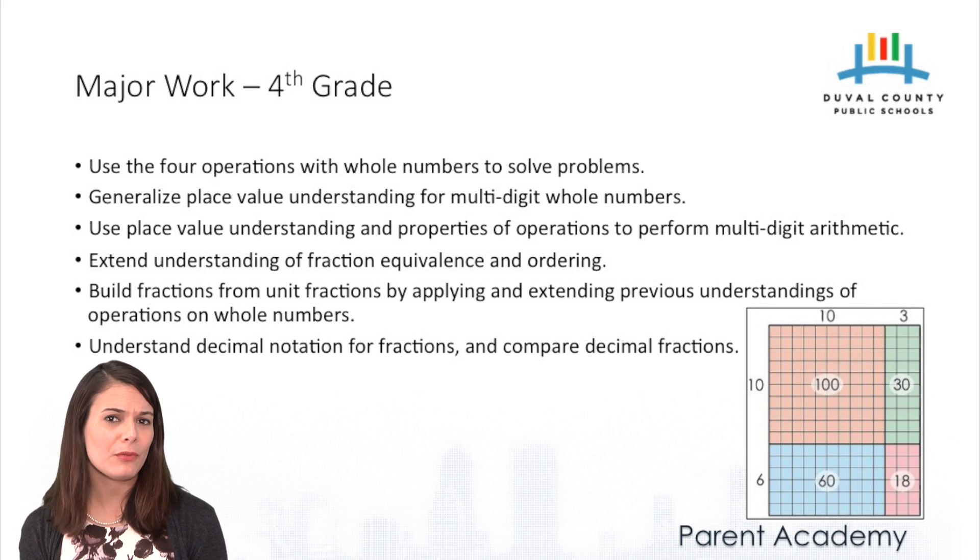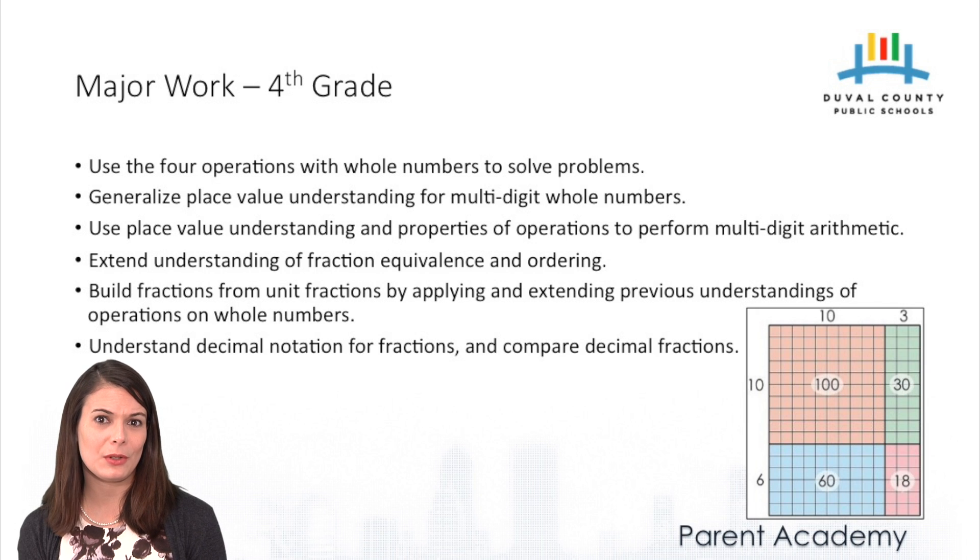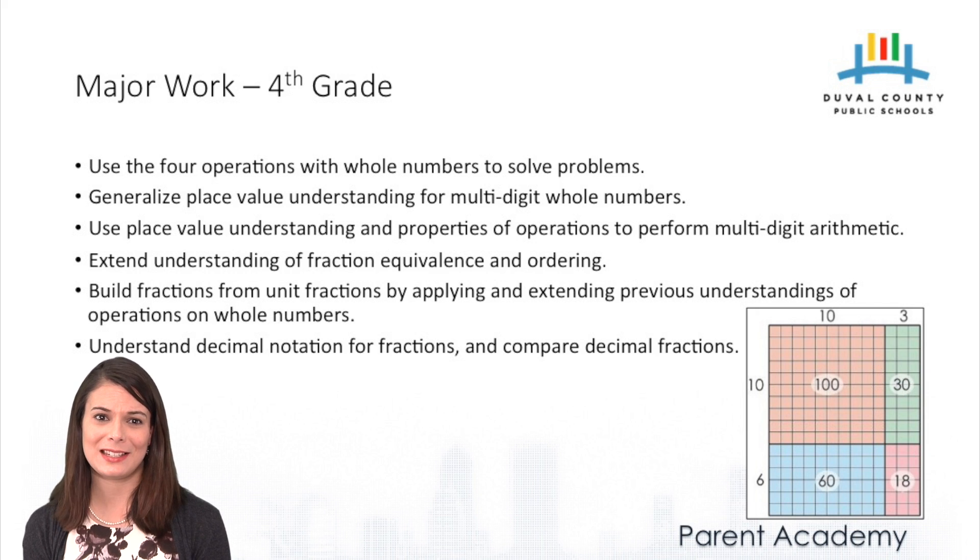Students use their place value understanding to really understand why multi-digit arithmetic works the way it does. They build fractions from unit fractions. That's to say, one-third plus one-third equals two-thirds. And they do this by building upon their previous knowledge of what fractions are. They also understand decimal notations for fractions. So they understand that one-half is the same thing as five-tenths and other such instances.